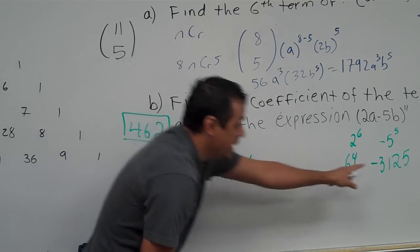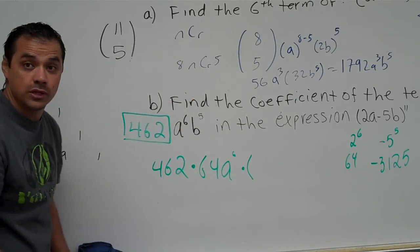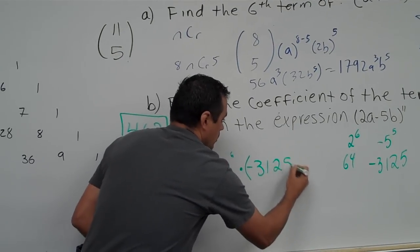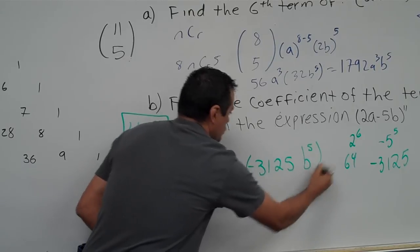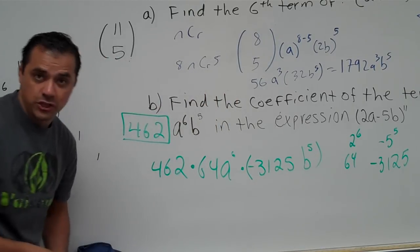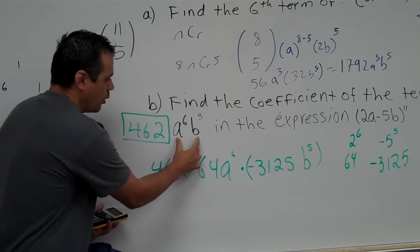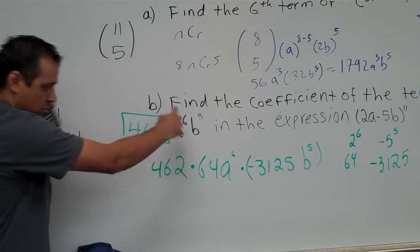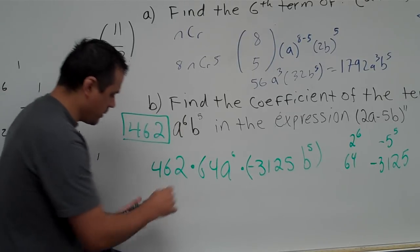Now, I'm just writing this so you can see that it matches this. It's just asking us for the coefficient, but just so you can see where the 64 came from. Times a negative 3,125. And that was b to the fifth, right? So, if we multiply all this out, that's going to give us our final coefficient, or the final answer that we're looking for. We already knew this. This was a to the sixth, b to the fifth, but we just wanted this big number, right? With all of them combined. So, here we go.